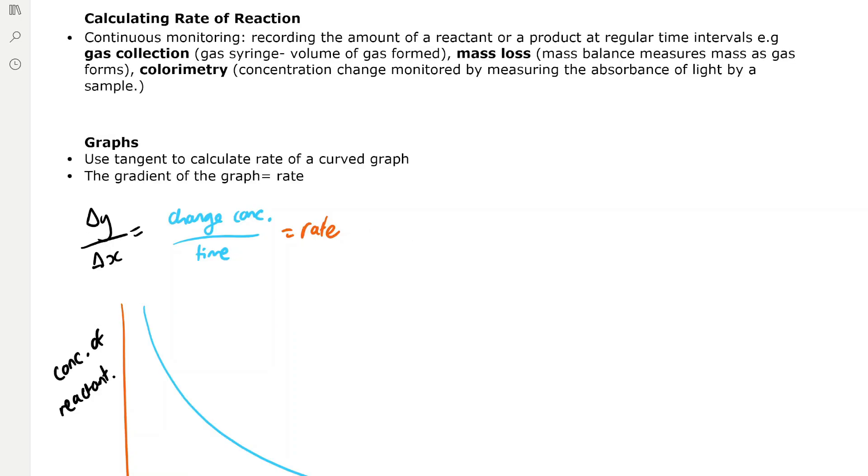We can calculate the rate of reaction using continuous monitoring, which is recording the amount of a reactant or a product at regular time intervals, and we can do this by three main methods.